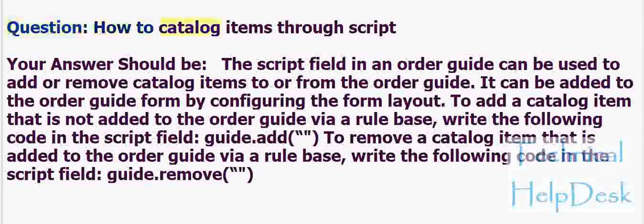Question: How to Catalog Items through Script? The script field in an order guide can be used to add or remove catalog items to or from the order guide. It can be added to the order guide form by configuring the form layout. To add a catalog item not added via a rule base, write 'guide.add' in the script field. To remove a catalog item added via a rule base, write 'guide.remove' in the script field.